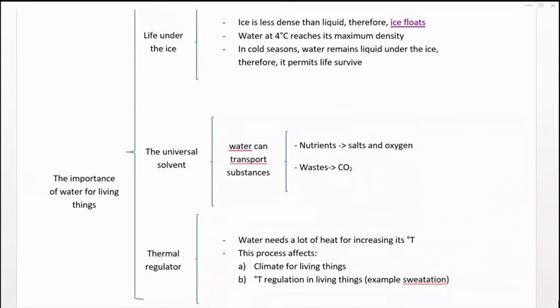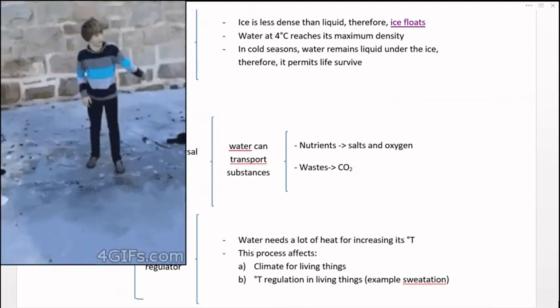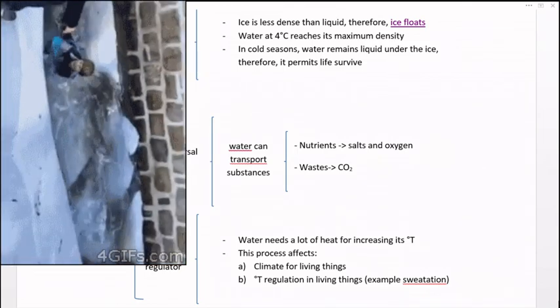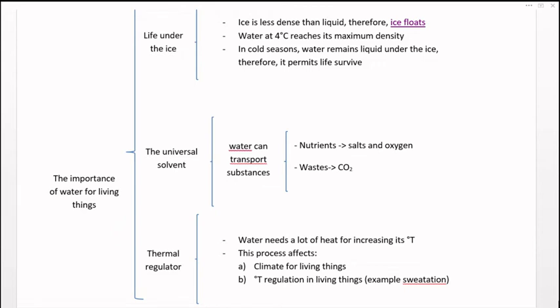In this new mind map we are going to study the importance of water for all the living things. First of all, we are going to learn about the life under the ice. As you already know, ice is less dense than liquid so that it can float. Water at 4 degrees Celsius reaches its maximum density. Vosotros sabéis que el agua solidifica a 0 grados centígrados. Pero a 1, 2, 3 grados centígrados se formarían como una especie de granizada. De tal forma que a 4 grados centígrados el agua todavía está líquida y es la temperatura más baja a la que nos la vamos a encontrar en estado líquido.